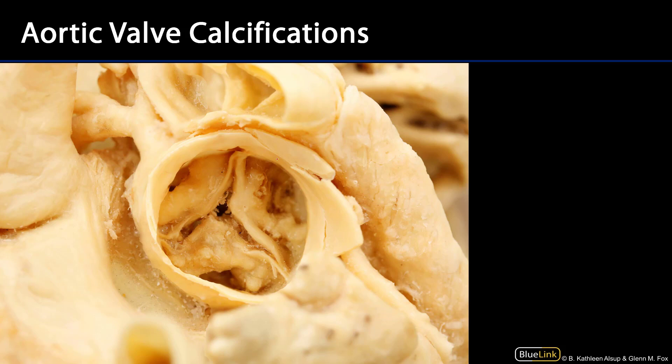The next pathology is an aortic valve calcification. Aortic valve calcifications are a common pathway for aortic valvular disease. We can tell we're looking at an aortic valve because I can see coronary arteries coming out of this area. Normally these cusps are quite smooth, but we can see some of these calcifications on the cusps here. Sometimes these calcifications can prevent the valves from fully opposing one another, so there might be regurgitation. In some cases, the calcifications can fuse the valves together and lead to a condition known as aortic valve stenosis.